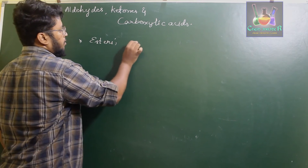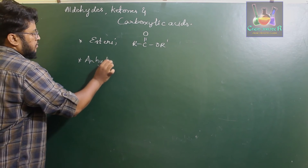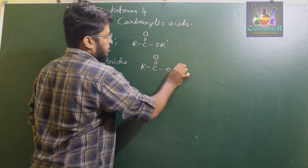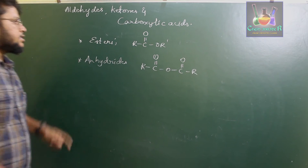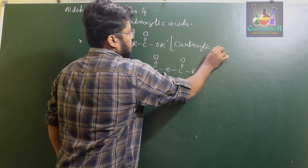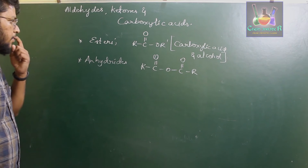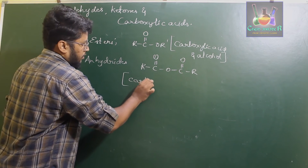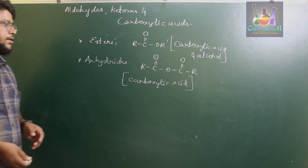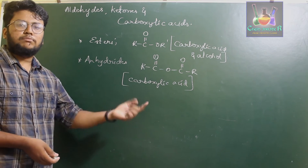Esters have the form R-C(=O)-O-R'. Anhydrides have the form R-C(=O)-O-C(=O)-R. Esters are derivatives of carboxylic acid with alcohol, whereas anhydrides are derivatives of two different — or similar — carboxylic acids reacting together.